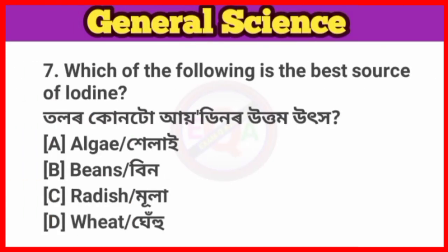Question No. 7. Which of the following is the best source of iodine? Answer: Option B, Beans.